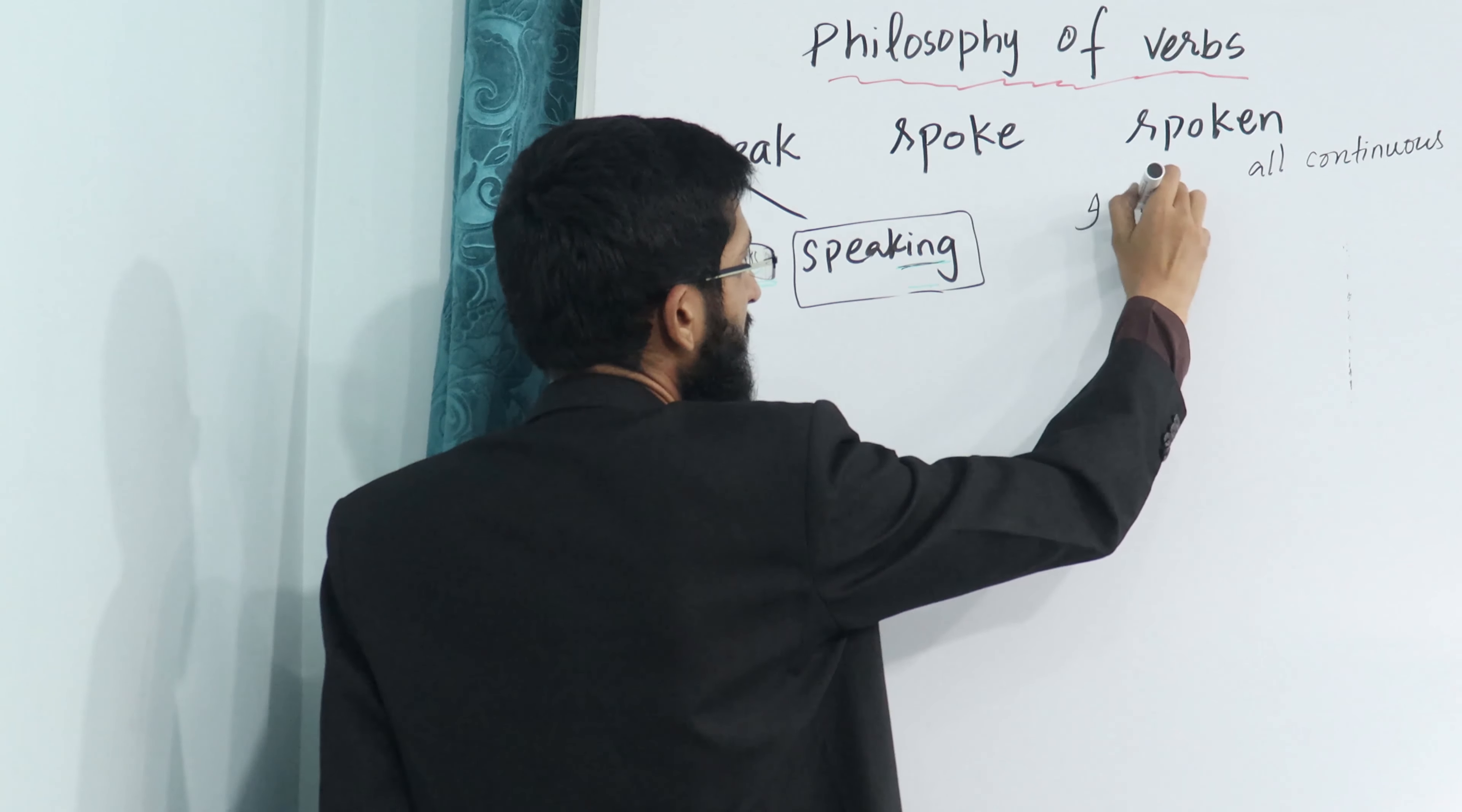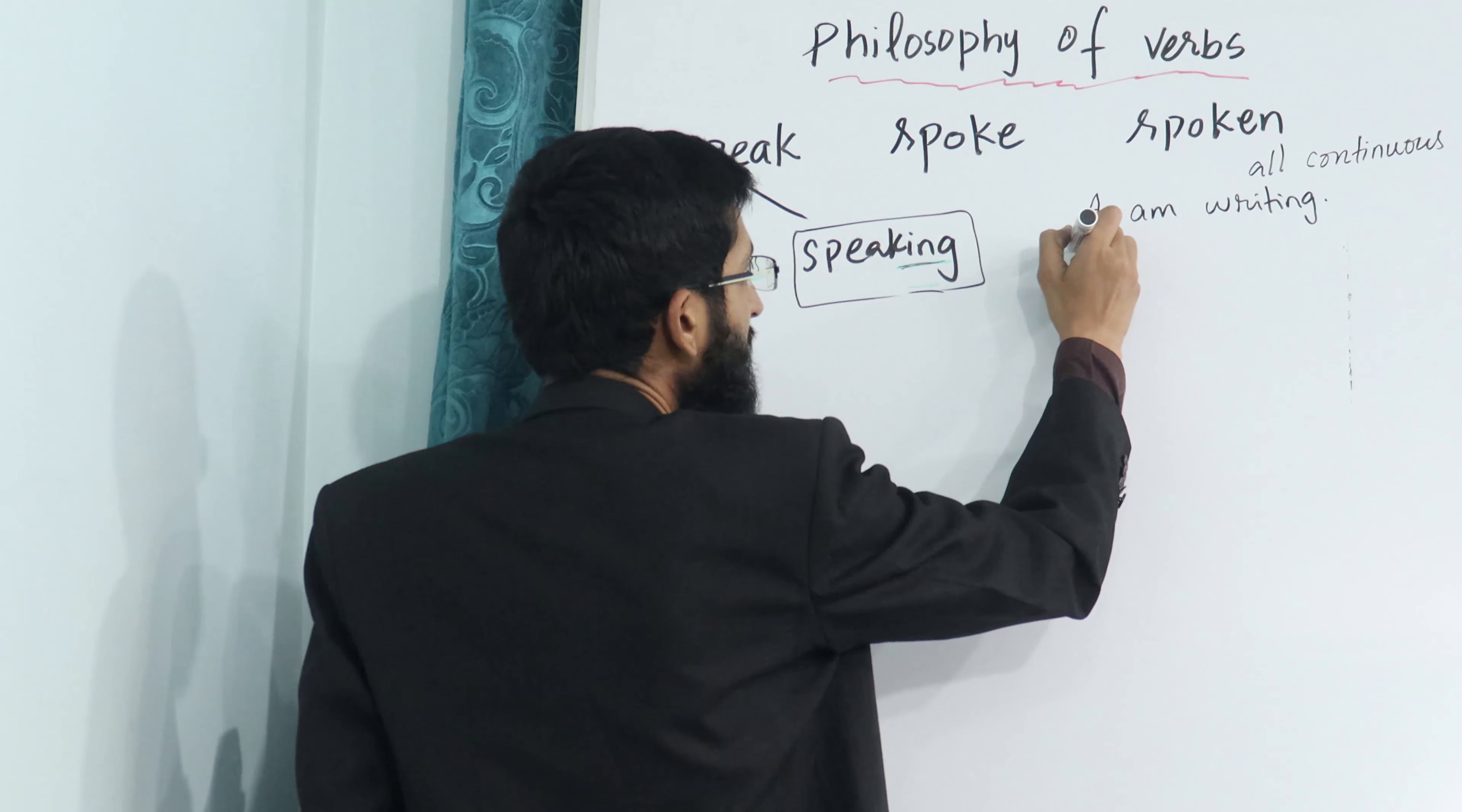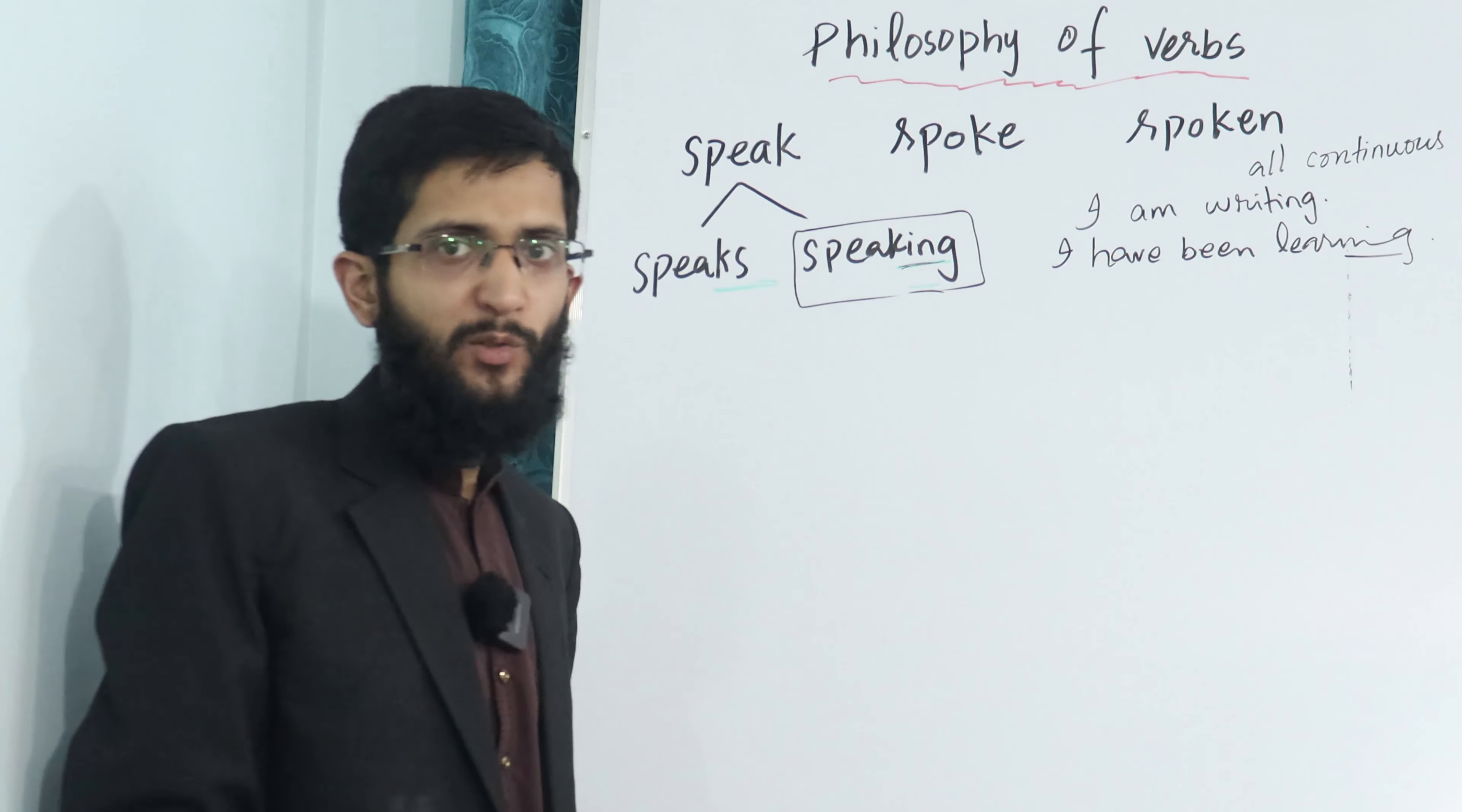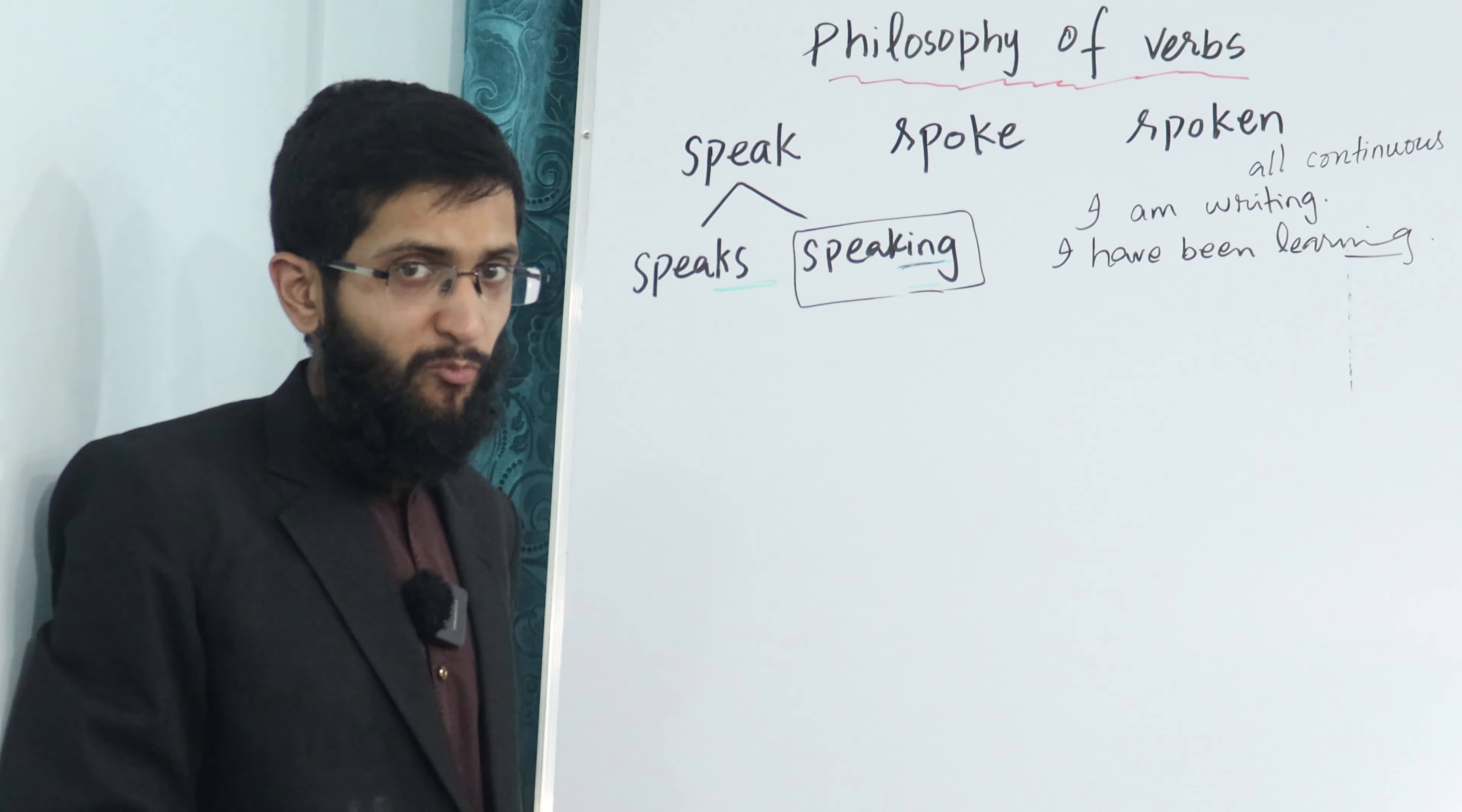Let me write an example: I am writing, or I am speaking, or I am cooking. This -ing form you have to use in continuous tenses. Another example: I have been learning English. Again continuous, you are doing something. I have been learning English for three years. This is the duration. Whenever you use 'have been' you add duration at the end.